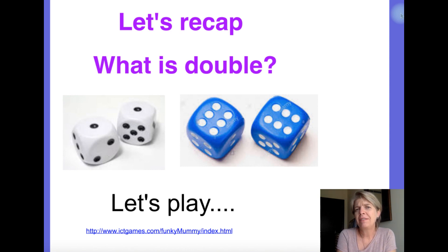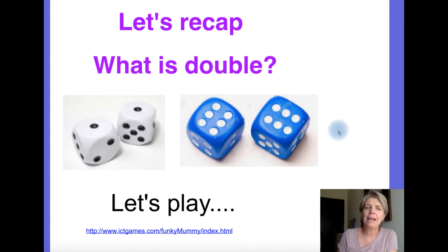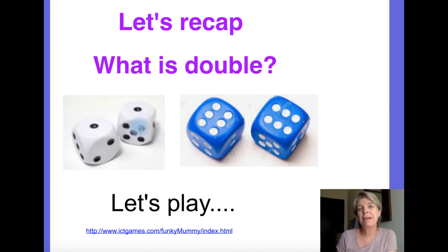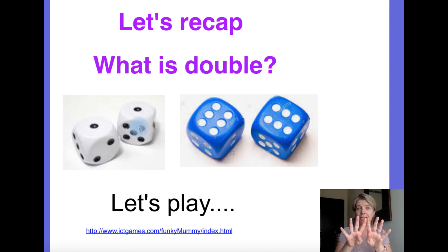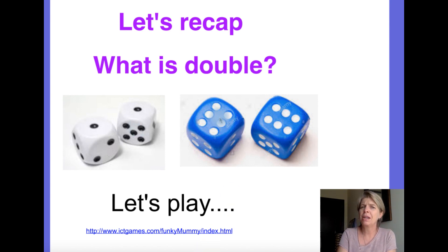But before we do halves, I thought we would just quickly have another look at doubles and doubling. Do you remember when we did doubles? Have a look at these dice. If this is one, this is double one. We said if you have a number and you put the same number with it, you double it. Here we have double six. Do you remember the game we played with the dancing mummies? Let's go and play that quickly to help us remember.